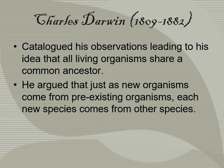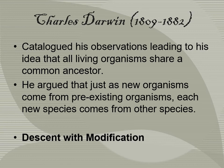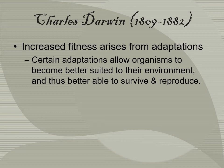Darwin cataloged his observations leading to the idea that all organisms come from a common ancestor. He argued that just as new organisms come from pre-existing organisms, each new species must come from a previous species — this is called descent with modification. Increased fitness arises from adaptations: certain adaptations allow organisms to become better suited to their environment, allowing them to survive and reproduce better. For example, a giraffe with a longer neck can reach higher leaves on trees.